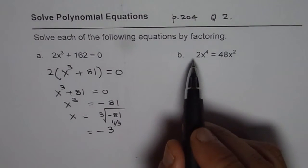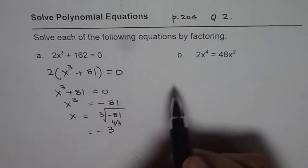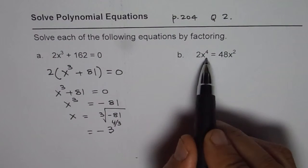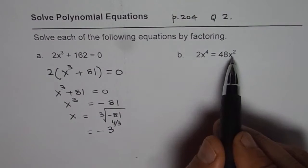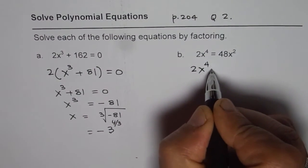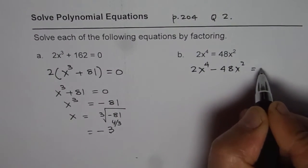Now, the next one here is 2x⁴ = 48x². Let us bring the terms to the same side. Remember, you should not be cancelling 2x² from both sides. In that case, you lose one solution which is x = 0. So you have to bring them together. 2x⁴ - 48x² = 0.